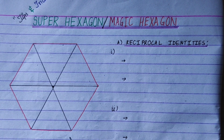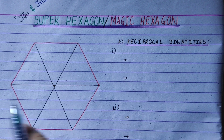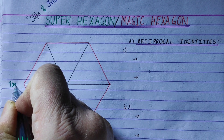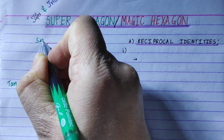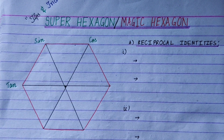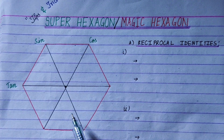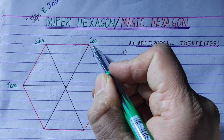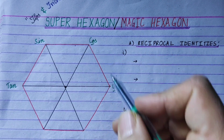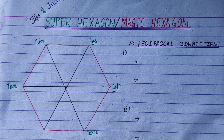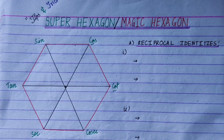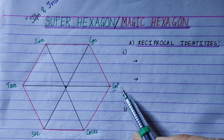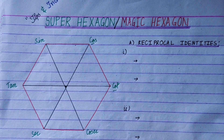I will show you how to do this. Let us start. Tan means sin by cos — we cut tan opposite. Cos. Tan equals sin by cos. This is tan. Trigonometric ratio: Cos.